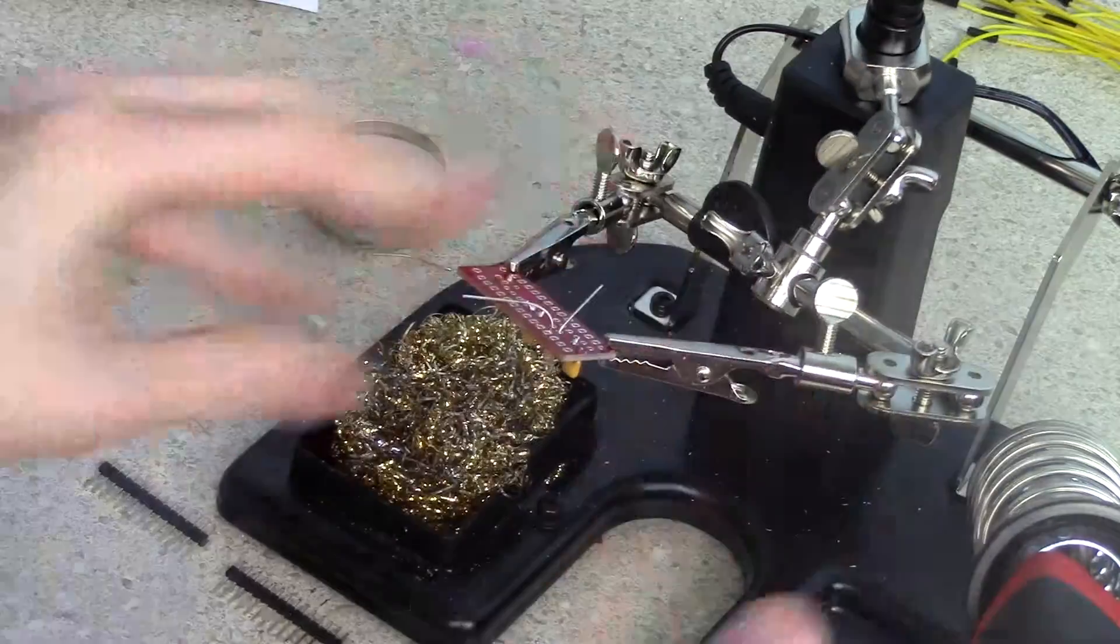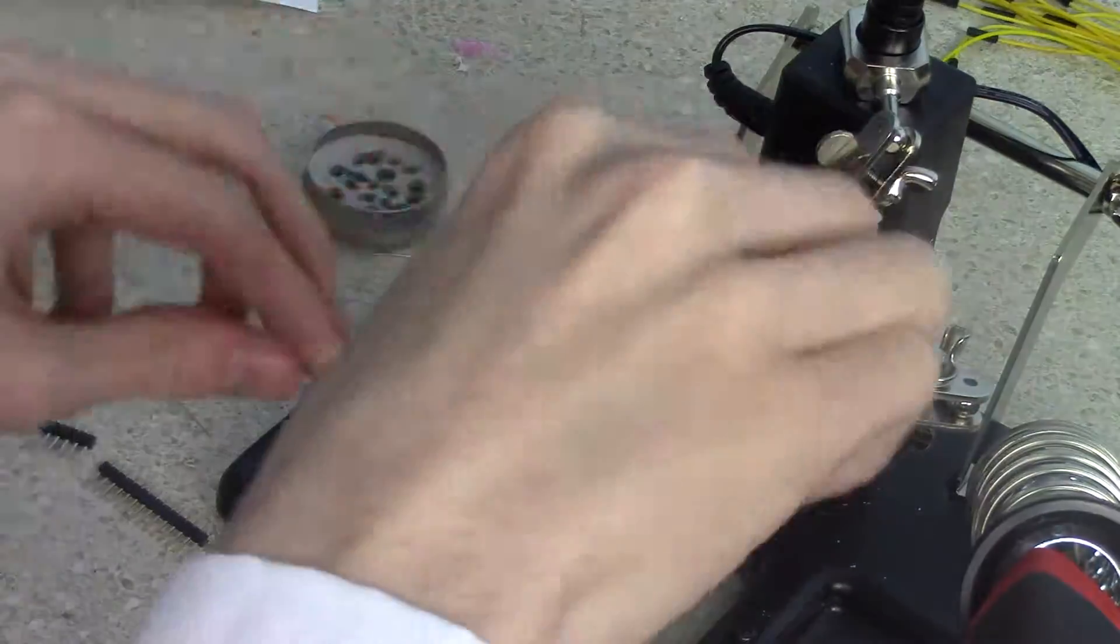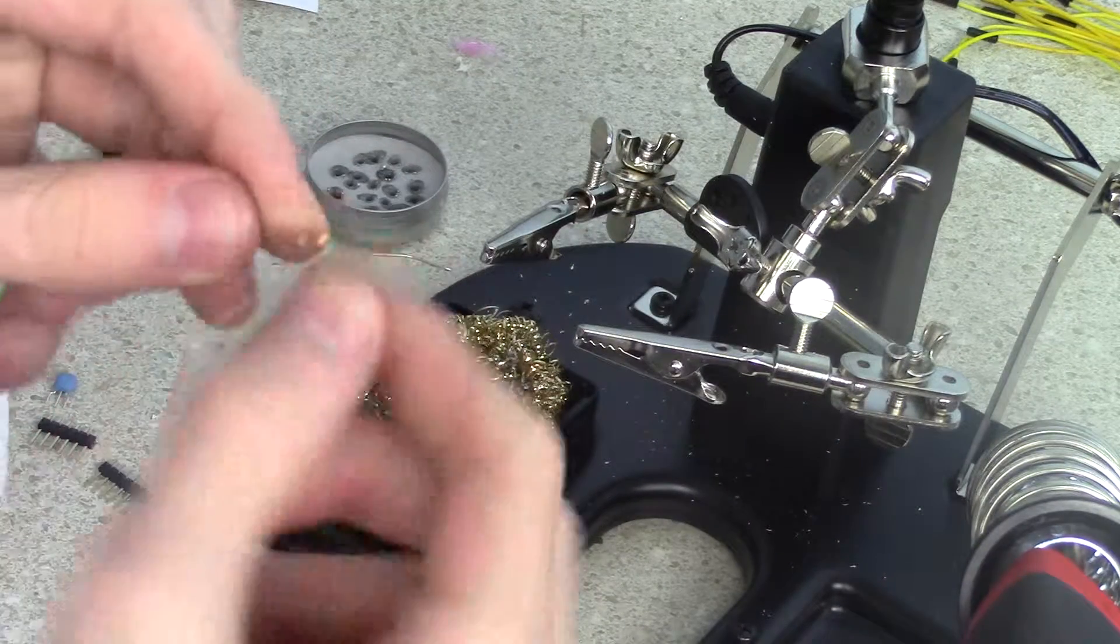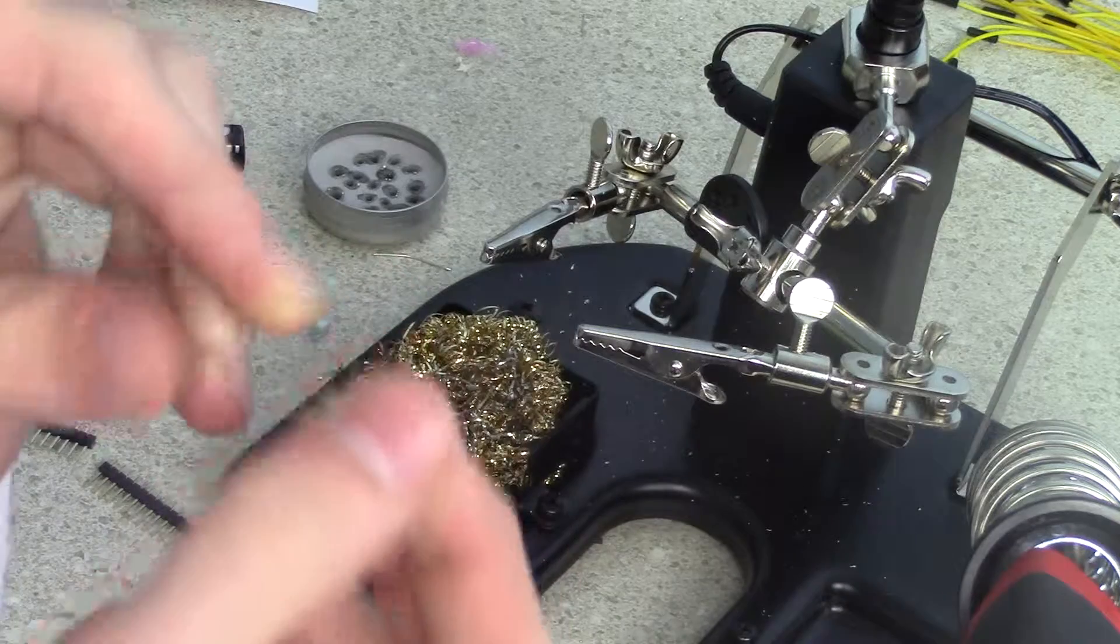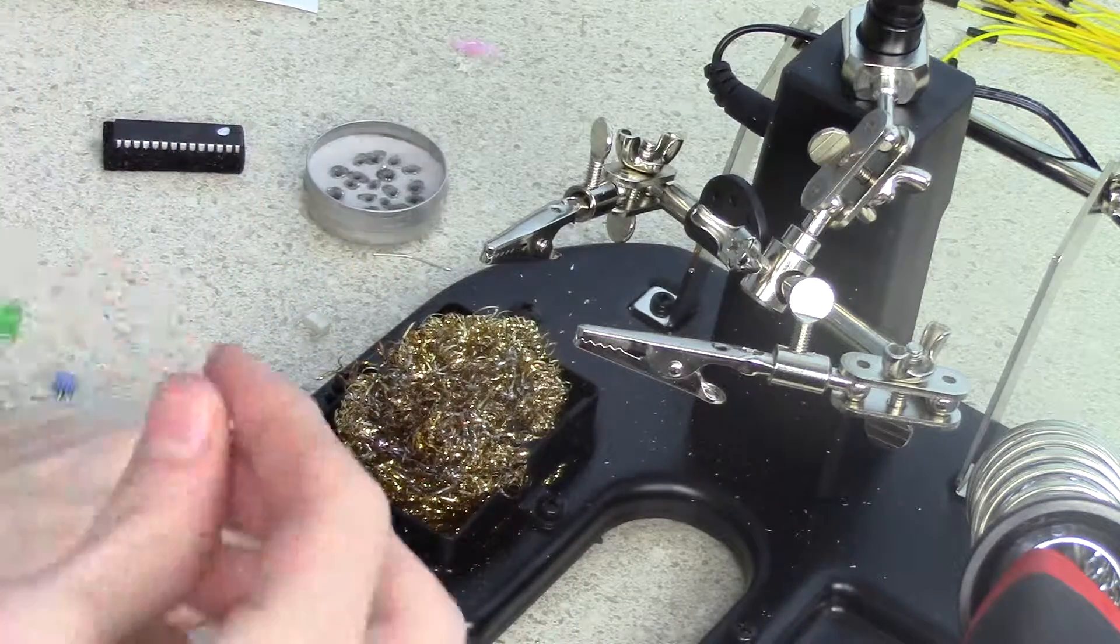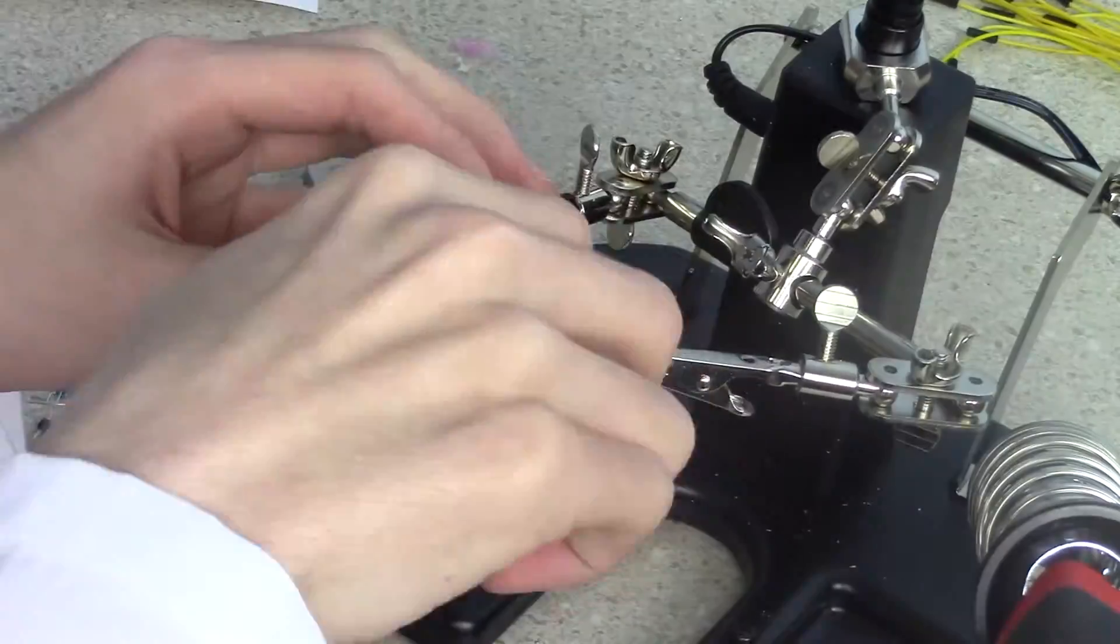Now for the resistors. Place the 10K resistor, which is the gold, orange, black, brown one, in between the two capacitors in the R1 slot. Then, in the R2-D2 slot, place the 4.7K resistor, which is the gold, red, blue, yellow one. The R2 slot is the third one from the left.